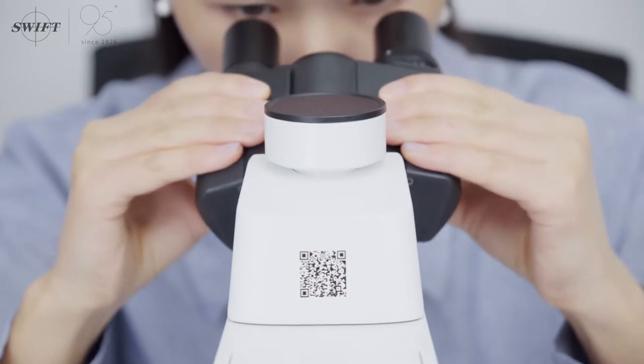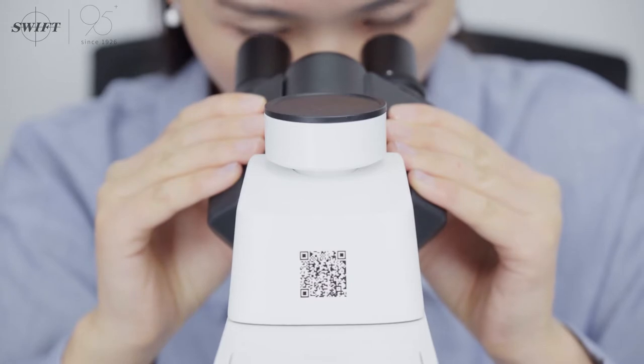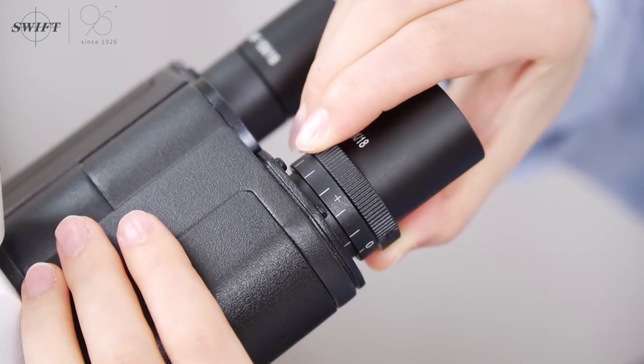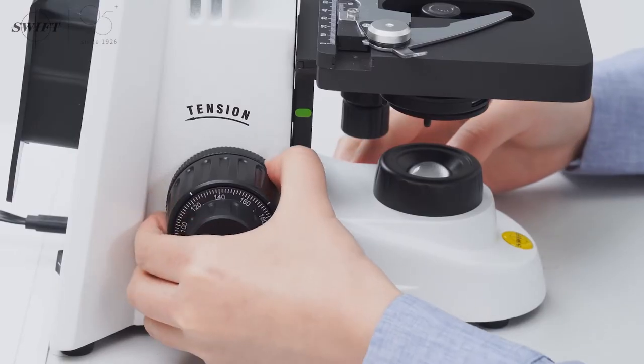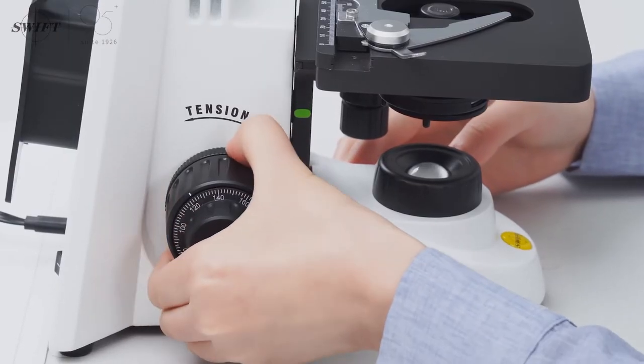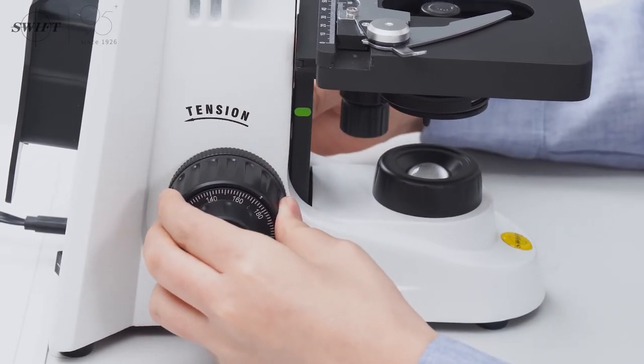By adjusting the interpupillary distance, the eyes can observe the image comfortably. Set the diopter ring at the starting position 0 for diopter compensation. By adjusting the tightness of the focusing hand wheel, the best comfort can be obtained during operation.